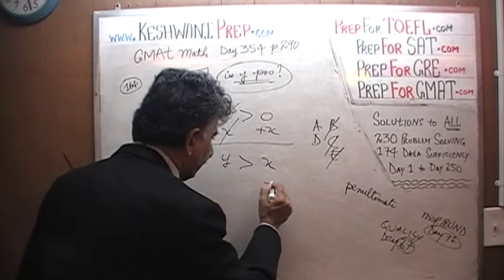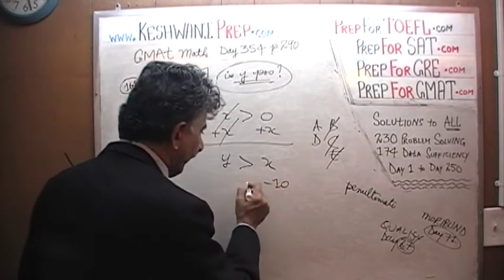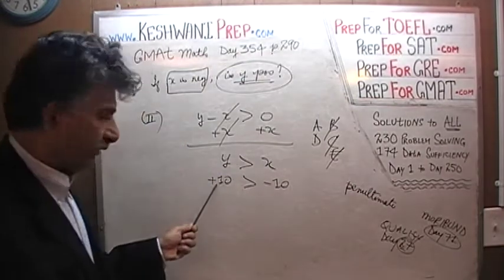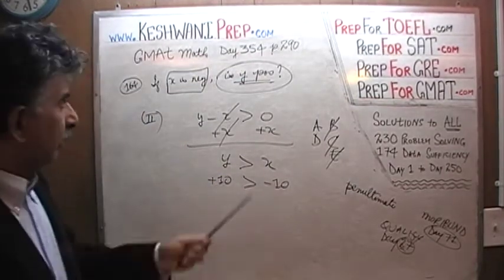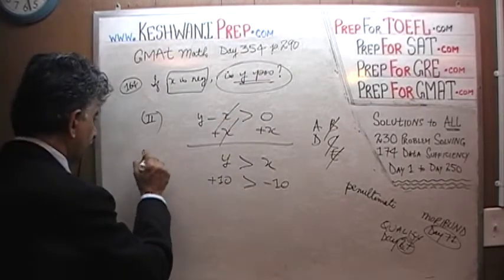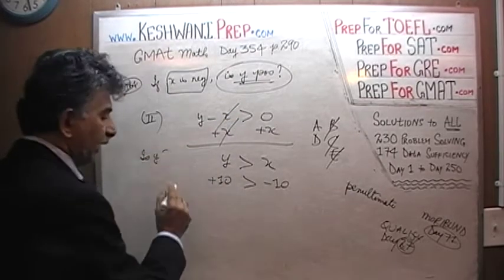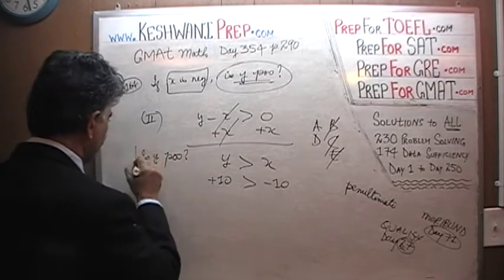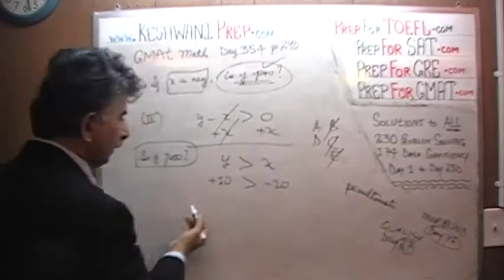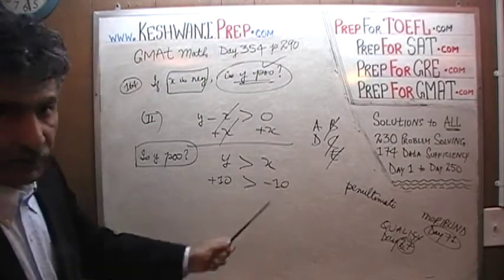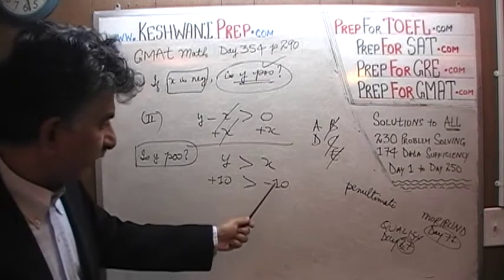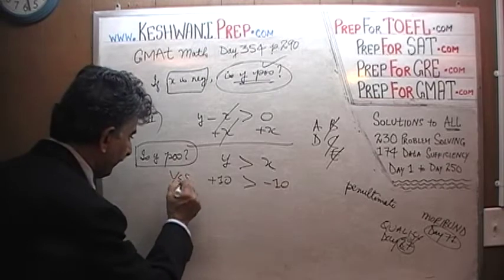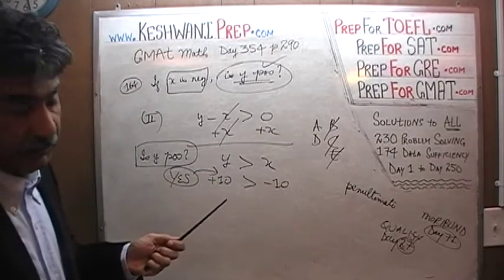For example, x could be negative 10. If x is negative 10, then y positive 10 is more than negative 10. The question is, is y positive? That's what we are trying to answer. Well, all we know is that y is more than x. One scenario is that maybe x is negative 10 and y is positive 10. In which case, is y positive? The answer is yes, y is positive.